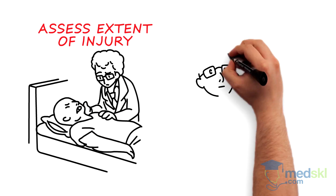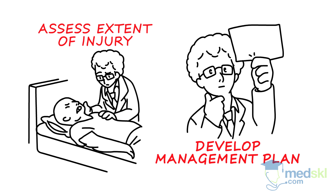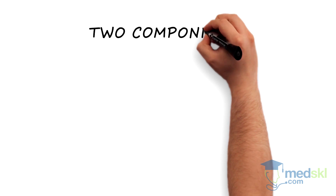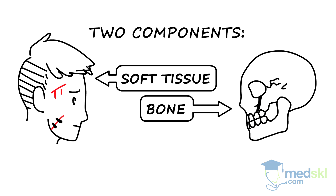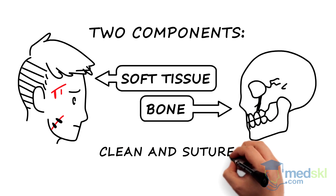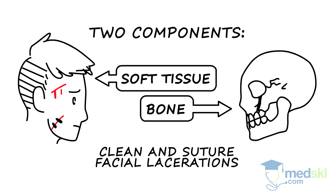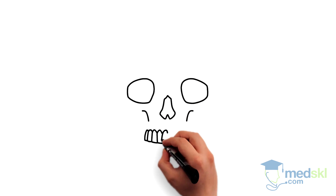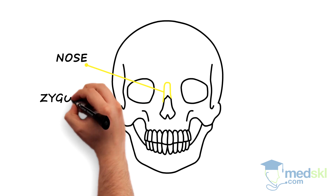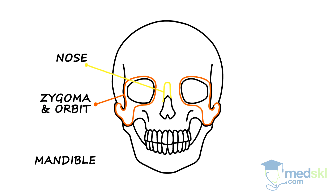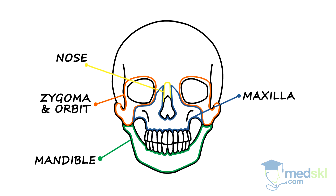Once the patient is stable, assess the extent of the facial injury and develop an appropriate management plan. For simplicity, there are two components to facial injuries: soft tissue and bone. If there are any facial lacerations, they should always be cleaned and sutured closed. With regards to bone, think of the face as a puzzle with five main bony pieces: the nose, zygoma and orbit, mandible, maxilla, and the frontal sinus and skull.